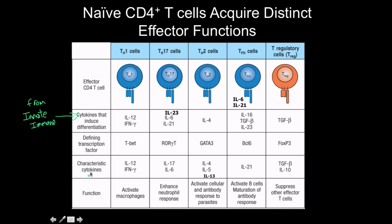All of these differentiation types — Th1, Th17, Th2, and so on — are all reversible differentiation. These are not permanent commitments. This cell is not going to be a Th1 cell for the rest of its life.